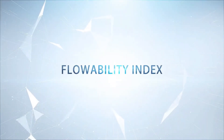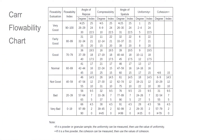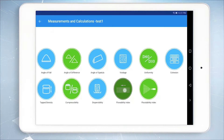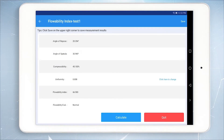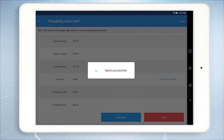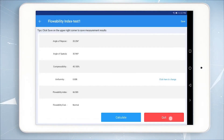The flowability index is the weighted sum of the angle of repose, compressibility, the angle of spatula, and uniformity or cohesion. After these values are measured, click Flowability and click Calculate to get the flowability index and flowability evaluation. Then click Save and Quit to complete the flowability evaluation.